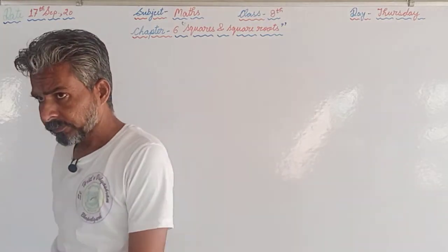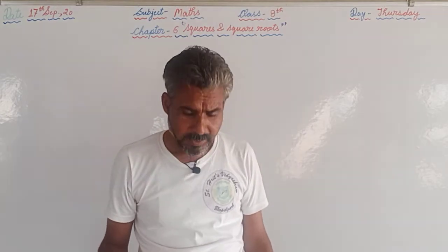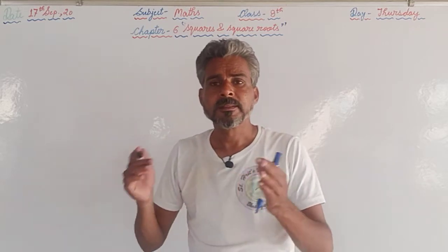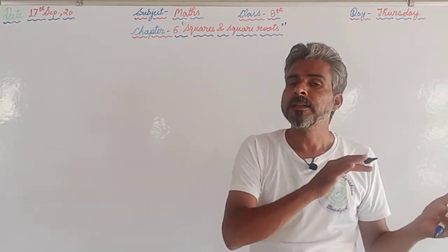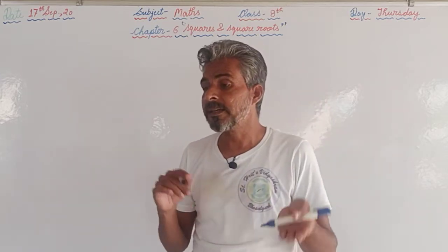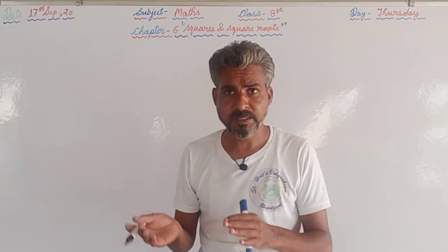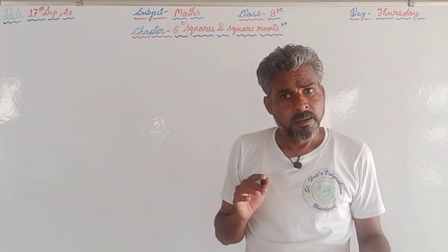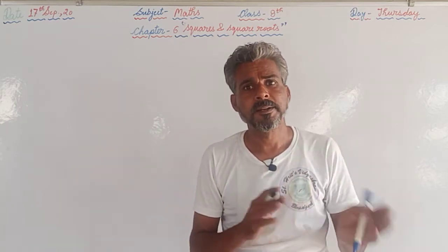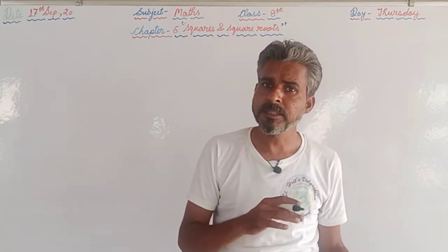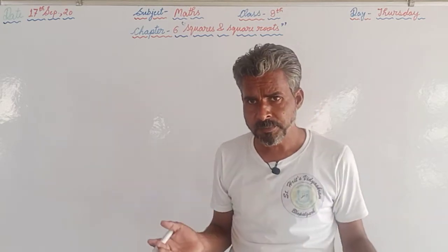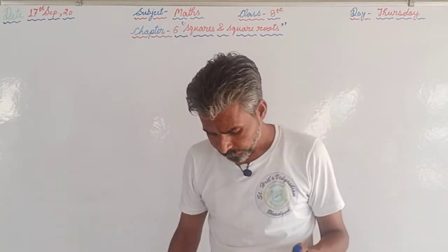We discussed how to find the square root by two methods: the first method is the prime factorization method, and the second method is the division method. We also discussed how to check whether a given number is a perfect square or not, and how to make a number a perfect square by multiplying, dividing, adding, or subtracting. Today we will take some examples as a recap of the chapter.